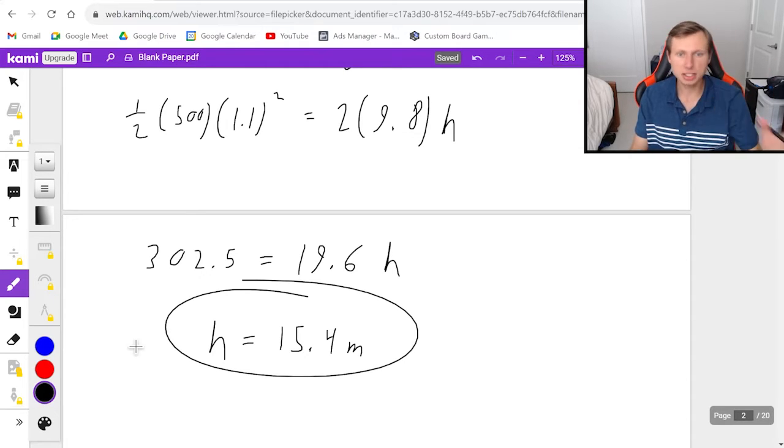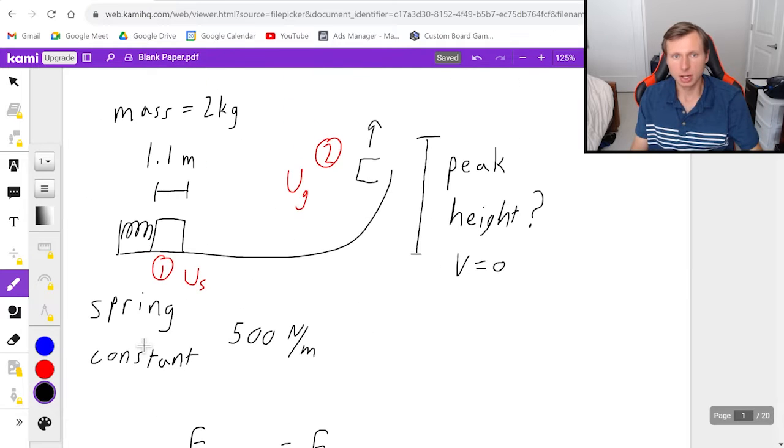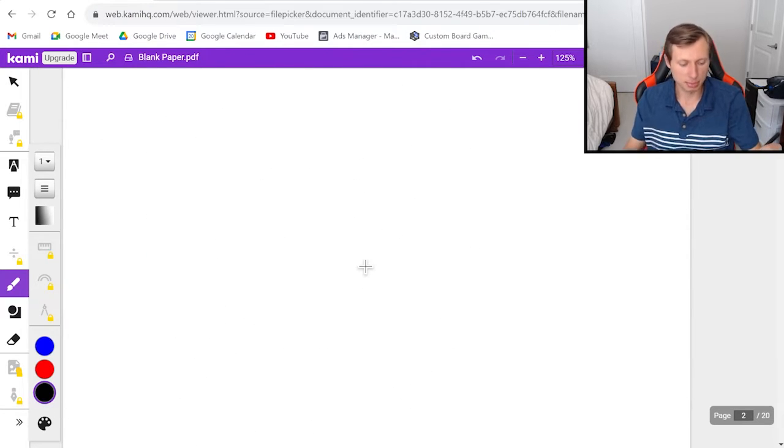If I plug in the left side on my calculator I get 302.5 and on the right side I get 19.6h. And so then my final answer is height equals 15.4 meters. That's how high it goes in the air. And that's it for the first one. Just as a quick reminder you just have to pick two points, one and two, say what kind of energy we have at each point, and then set them equal to each other. Very simple. Let's look at a couple more examples.